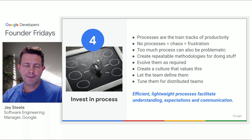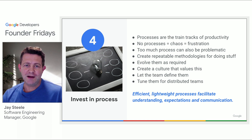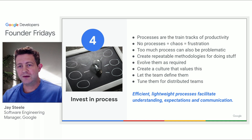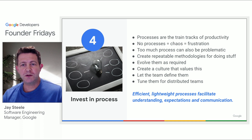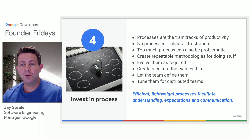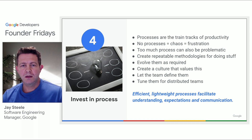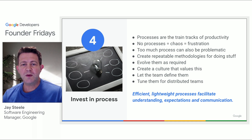Number four: invest in process. Some people don't like the word process — it makes it feel a little too big-company — but you really need them. Processes are the trained tracks of productivity. I've been in environments where people just try to wing it and it just does not work. It's also important to ensure that processes are lightweight and not burdensome. You want to create repeatable, well-understood steps for achieving goals. You want people to understand what they need to be steering toward every day. You want to build a culture that values having effective processes, and you want to let the team actually build and evolve them over time so they're bought in. All this is especially true when working across time zones or continents — the processes should factor in the challenges presented by that separation.